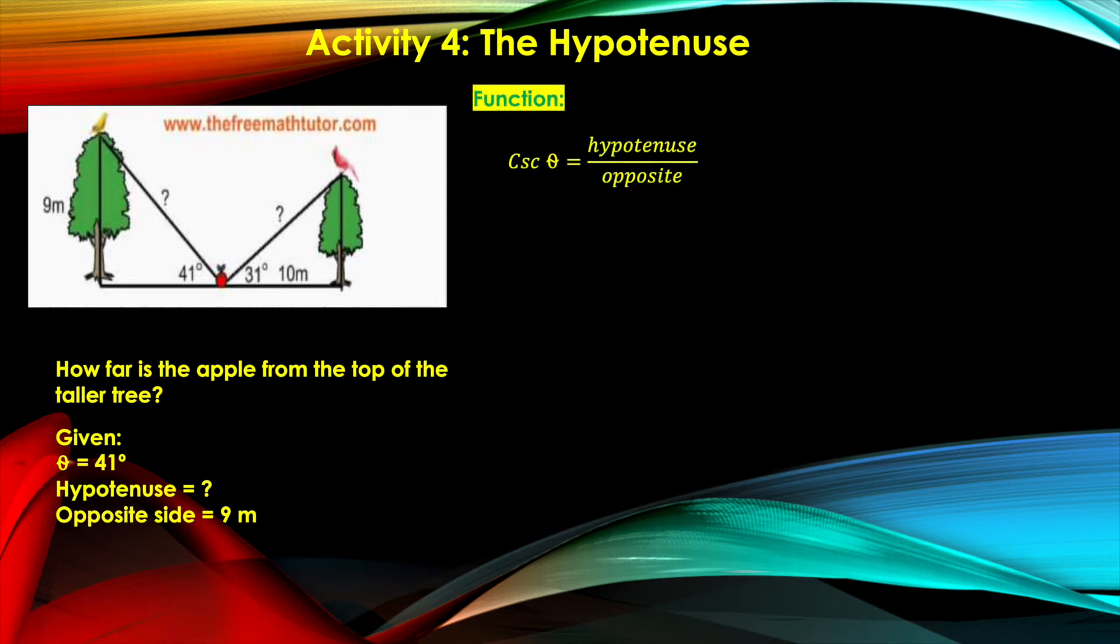Yes, you're right. It's cosec θ equal to the ratio between the hypotenuse and the opposite side.